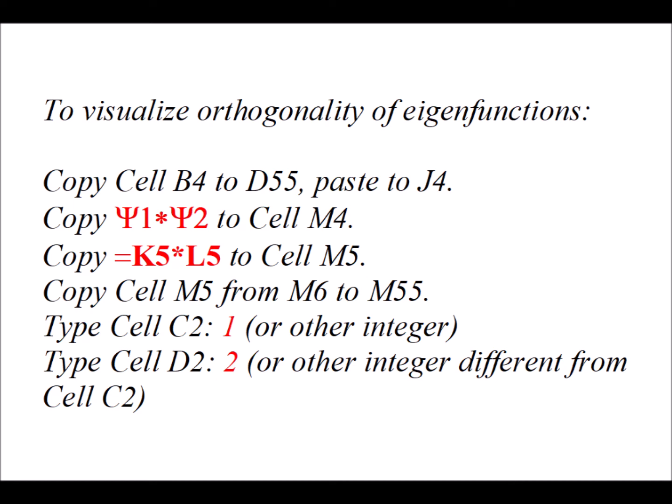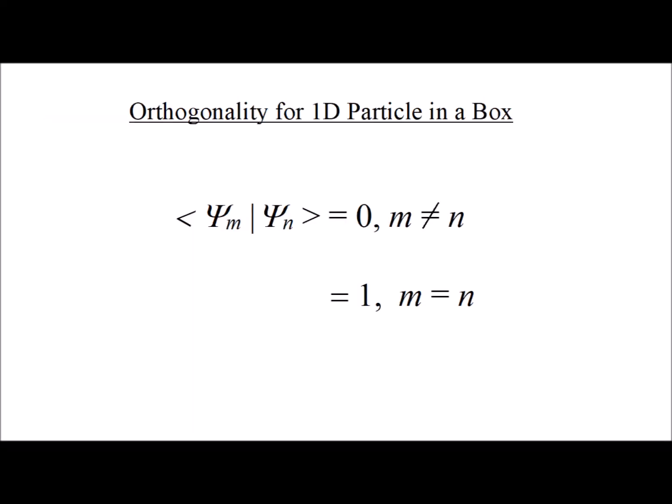If we have the same eigenvalue, we get a normalized eigenfunction — one with an overall probability of 1. Symbolically, the integral over all space of two eigenfunctions with different indices gives 0, since they are orthogonal. If m equals n, then since these are normalized eigenfunctions, the integral over all space equals 1.